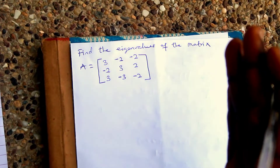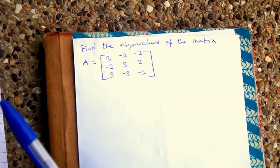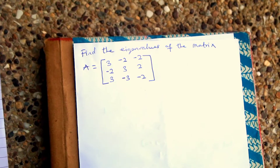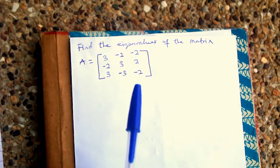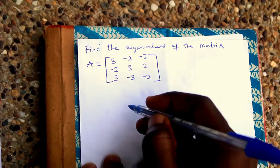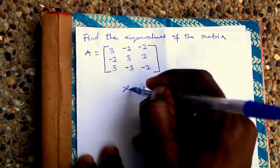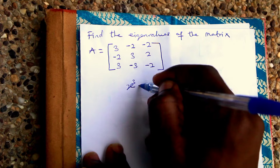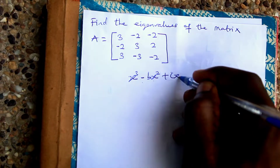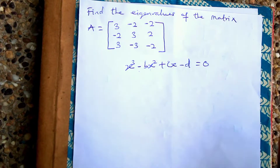This video will now focus on how to find the eigenvalue of a 3×3 matrix using the calculator. Before finding the eigenvalues, we resolve the characteristic equation into the form: s cubed minus b·s squared plus c·s minus d equals zero.